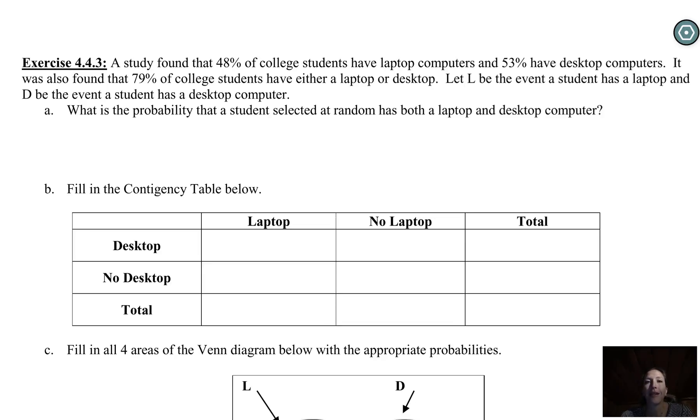This next exercise is another example of using a contingency table, but we're also going to add how that would map to a Venn diagram so we could use either to do the questions that come next. I highly recommend you give it an attempt on your own, but I'll give you some opportunities to pause as we're working on it so you can test your skills in slightly more manageable chunks.